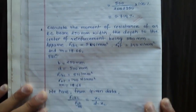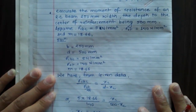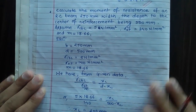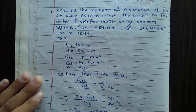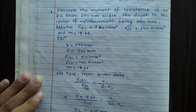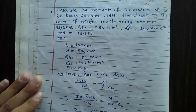Next question: Calculate the moment of resistance of an RC beam 250 mm wide, depth to center of reinforcement being 500 mm. Assume σCBC = 5 N/mm², σST = 140 N/mm², and M = 18.66. Given: D = 500 mm, σCBC = 5 N/mm², σST = 140 N/mm², M = 18.66.